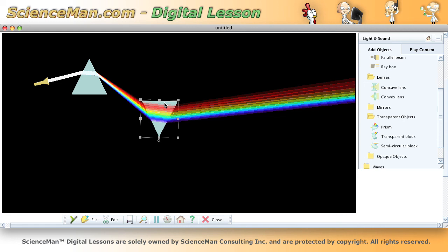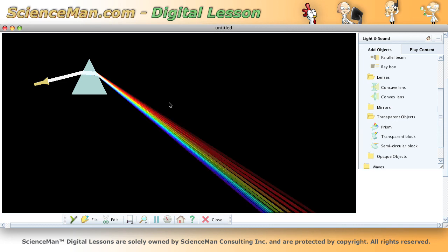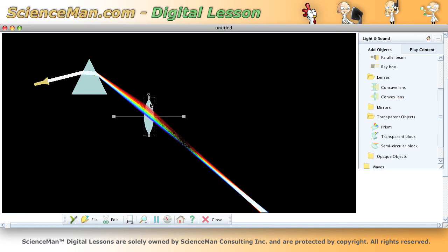So that is one of those things that just got into textbooks that shouldn't be there. What Newton did was he used a convex lens, and the convex lens was placed in the stream of the spectrum.